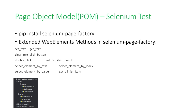How do you run page object models in Python with Selenium? You're going to have to use the Selenium Page Factory library, which is what we'll be using in today's video. There are several methods supported by this library: set text, get text, clear text, click button, double click, get list item count, and so on. You'll see us use these later on when I show you the code.